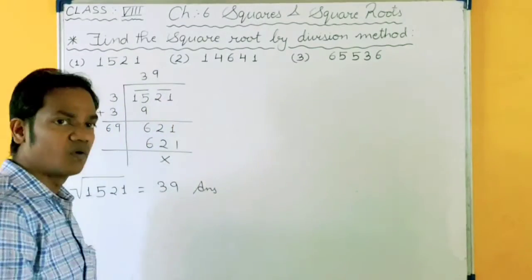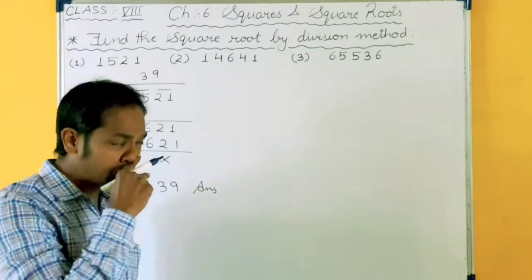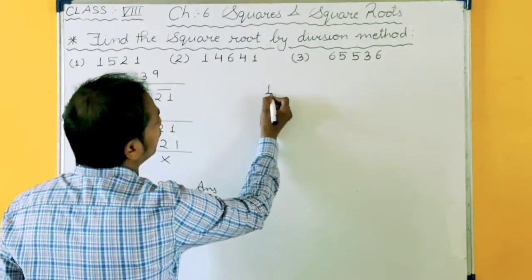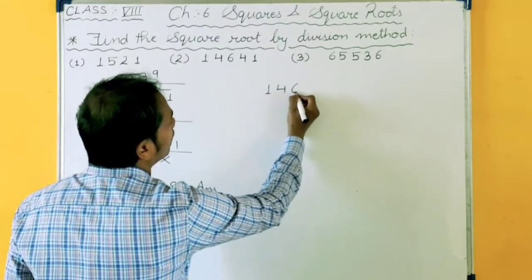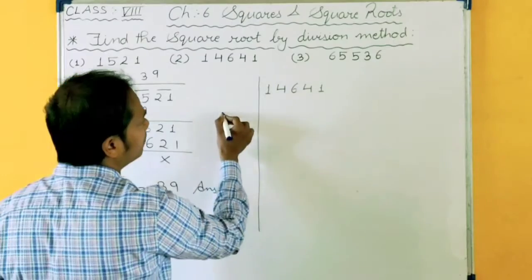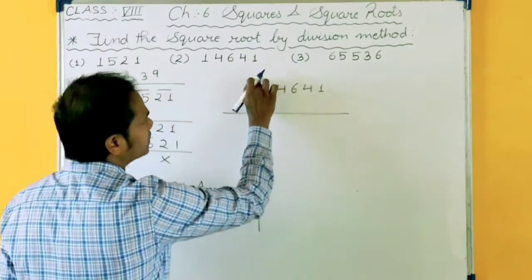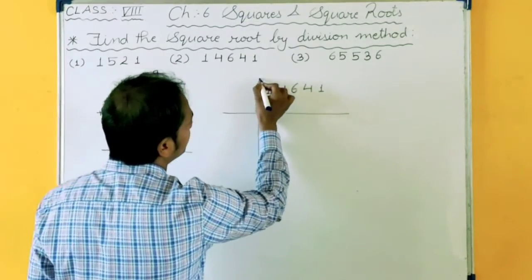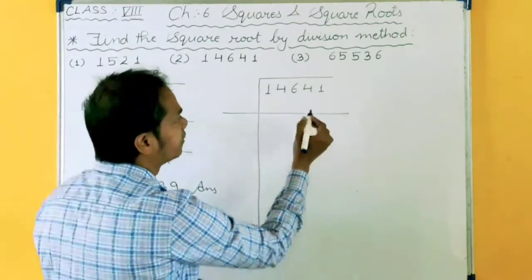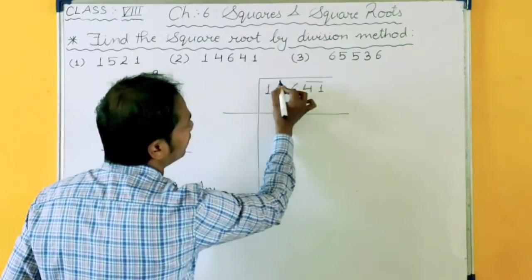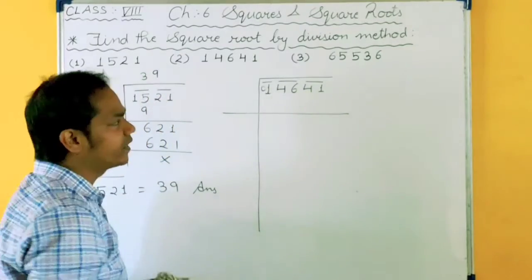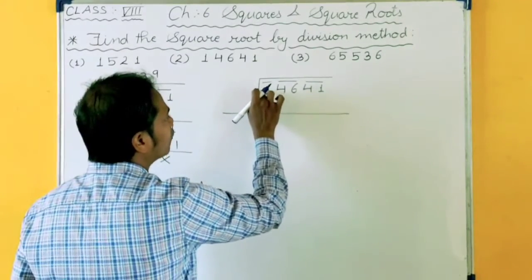Let's see another example. So slowly and gradually this method will fit in your mind. Again 1, 4, 6, 4, 1. Divide it in column. What is your first step? Make pairs. And how you will make pairs? From right hand side. This 41, 46, and this 1 is alone means 01. So no need to write 01, it is understood.